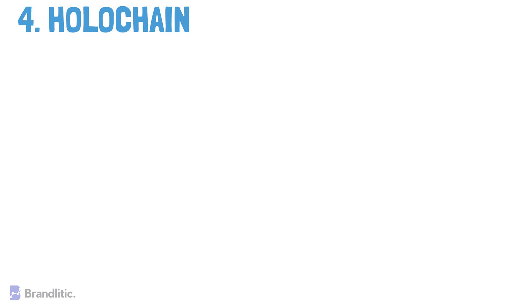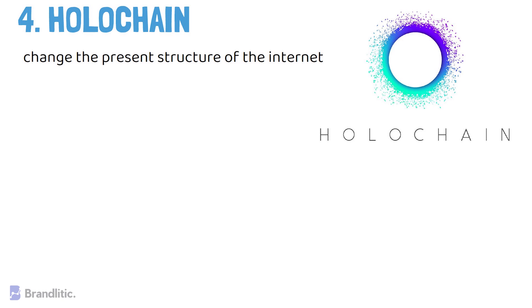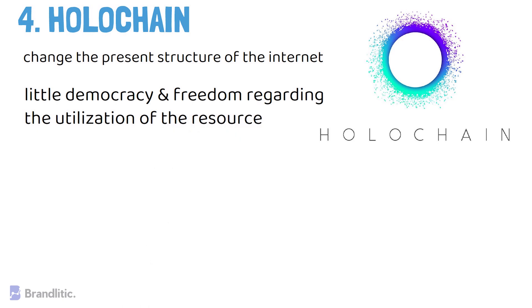Number four: holochain. This DLT technology claims to be what comes after blockchain, and the holochain team has solid propositions to back that up. Holochain is after completely revolutionizing the internet as we know it. The internet today is structured on a server-client basis, meaning decentralization is not optimum and there is little democracy and freedom regarding utilization of resources.